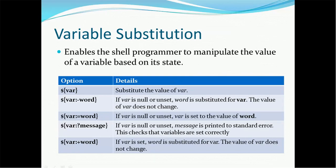The second option is `${var:-word}`. This means if var is null or unset, word is substituted for var, but the value of var does not change. So if the variable var contains null or if you have not set any value to this variable, the value available will be word — you can replace word with any value you need.